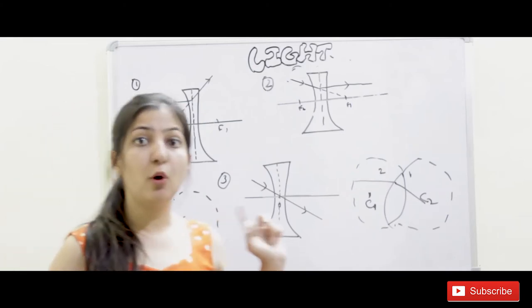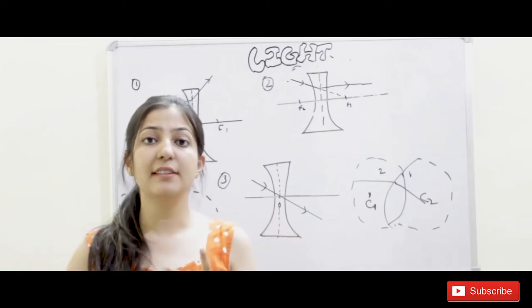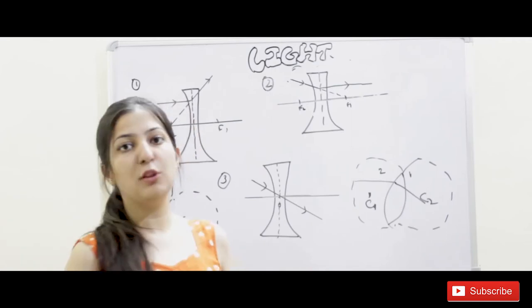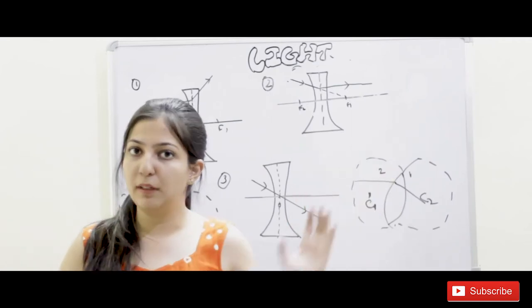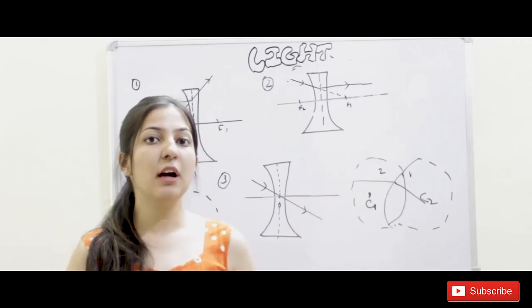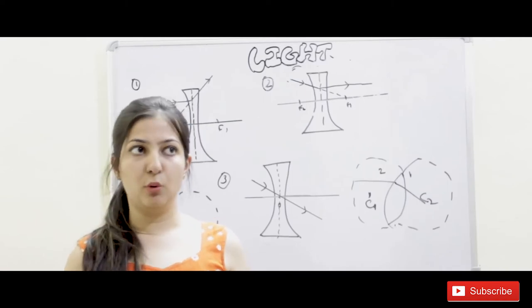For example, we talk about convex mirror. Convex mirror has two cases. There are two cases: one is the object when you place at infinity, and the other is the object when you place anywhere. So we understand the two cases.